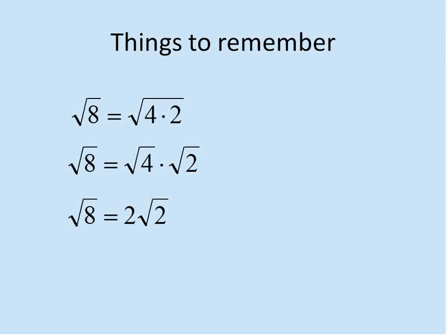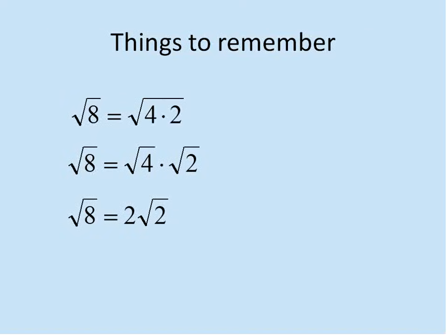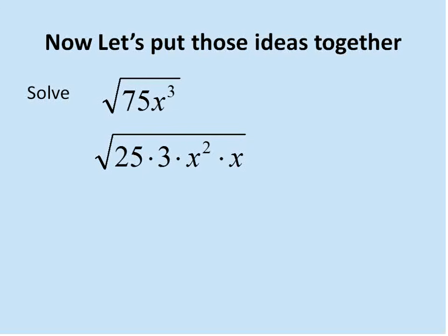We're going to combine all of that together into a question involving a number and a variable. We have the square root of 75x to the power of 3. We're going to look at the number and the variable separately, because 75x³ is the same as 75 times x³, and you can separate them as far as square roots go.